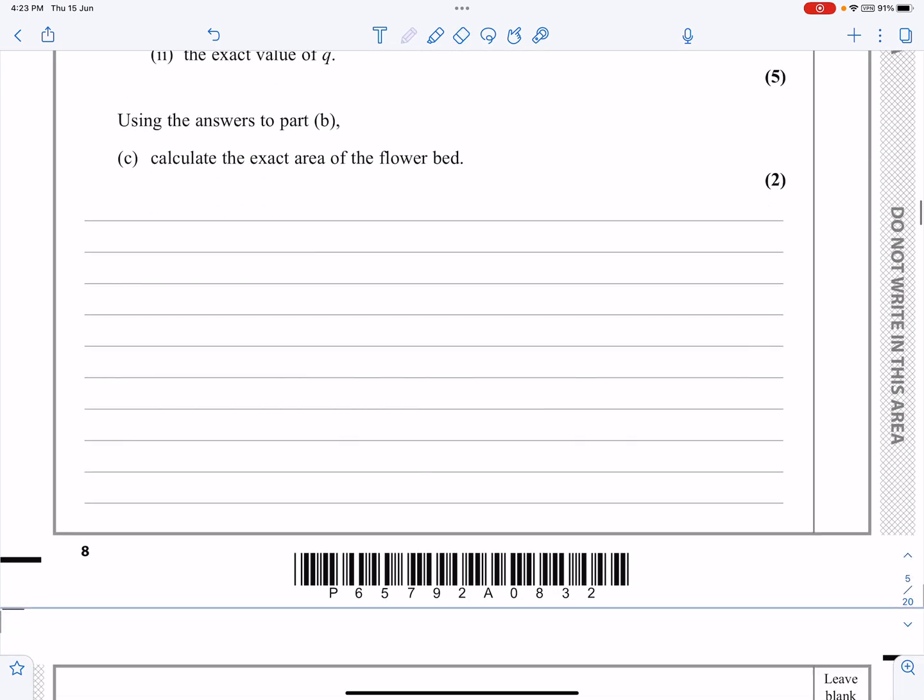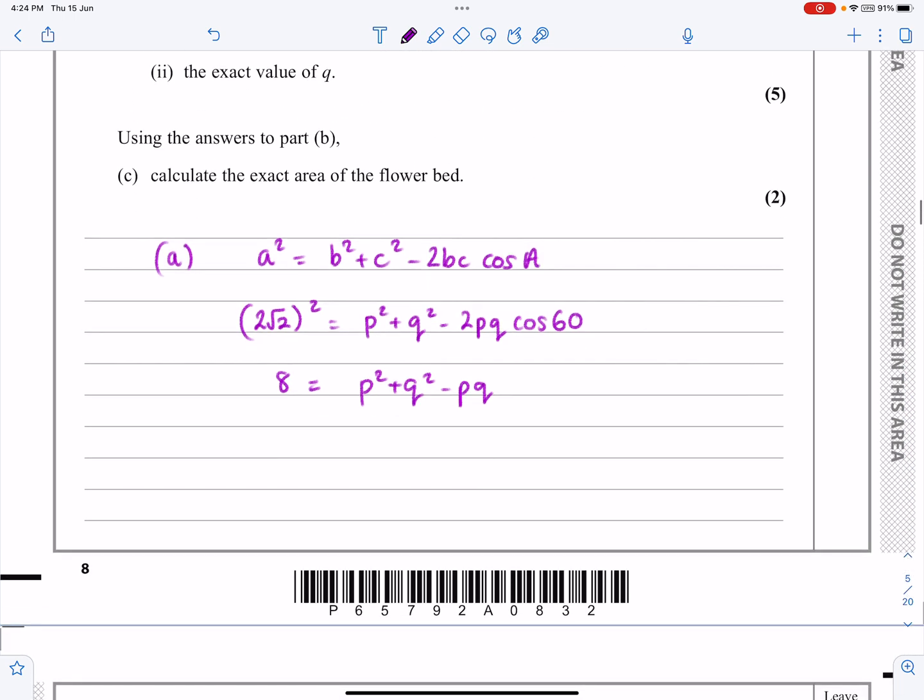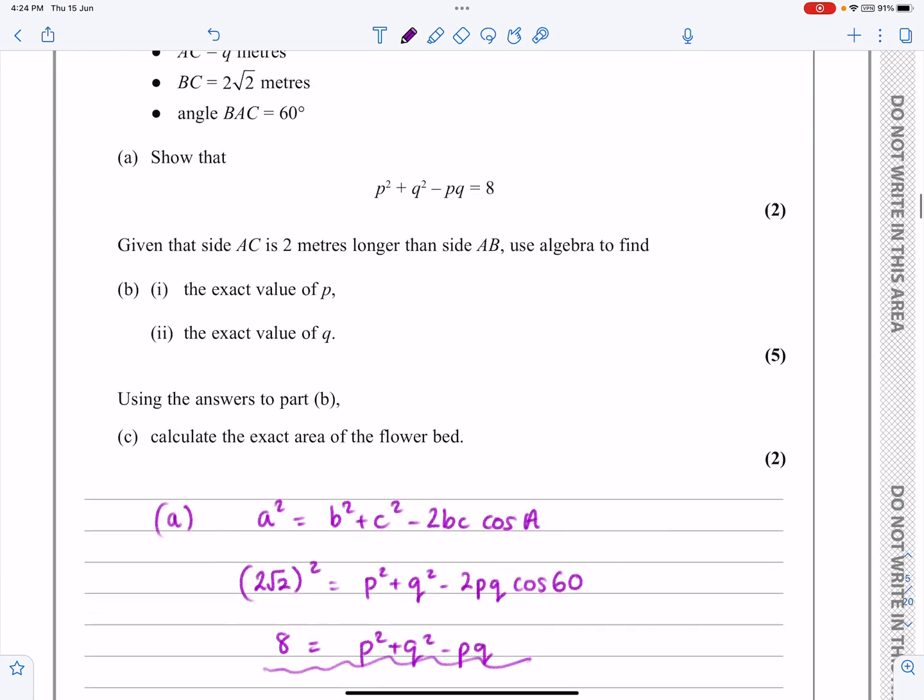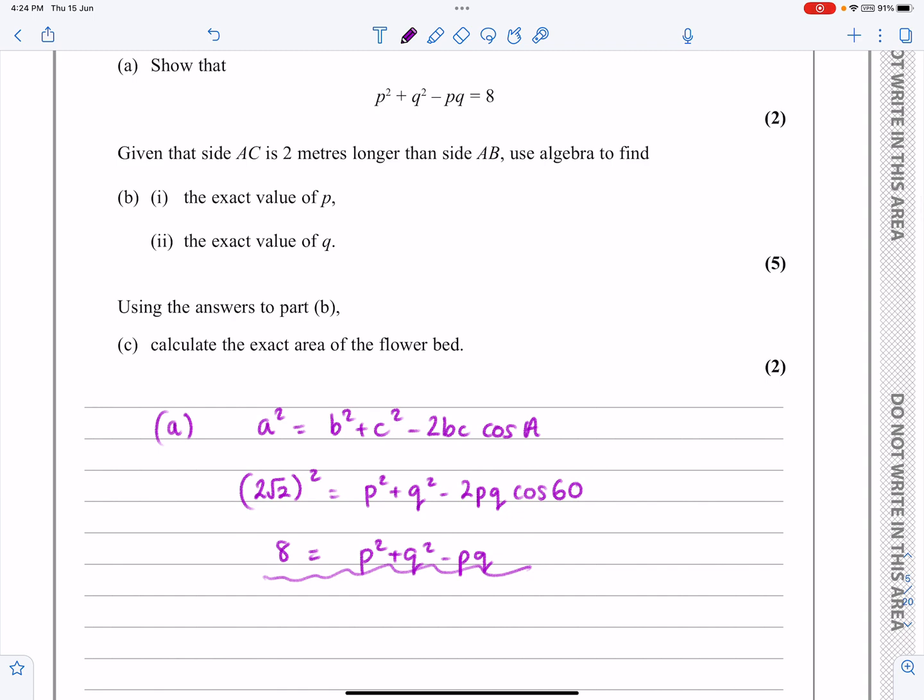For part A, we know the cosine rule is A² = B² + C² - 2BC cos A. In this case, we've got (2√2)² = P² + Q² - 2PQ cos 60. This is looking good already. Let's tidy that up. 2√2 squared is 8. I'm going to have P² + Q². Cos 60 is a half, so those two are going to cancel. I end up with minus PQ. That's it straight away, it's just dropped out there. The answer to part A is just basically applying the cosine rule. It's only worth two marks there.